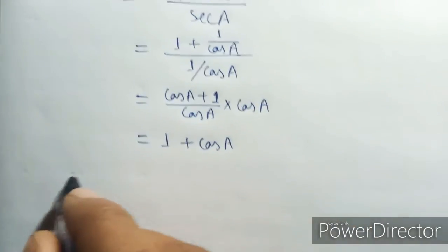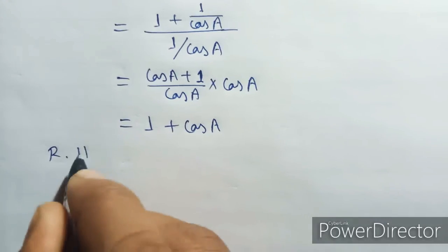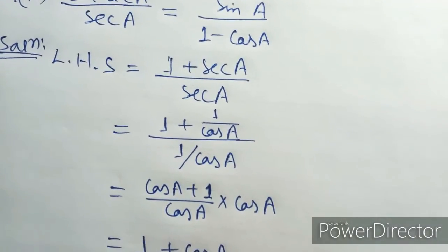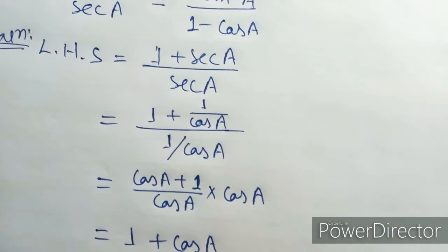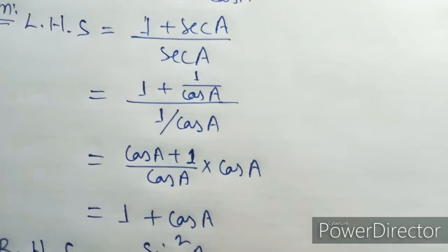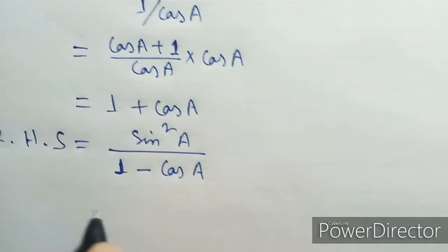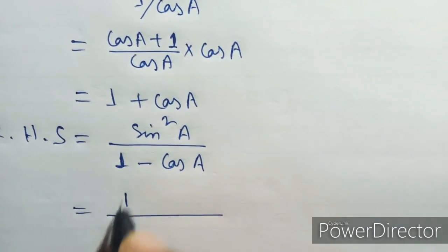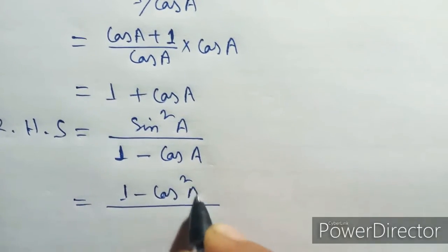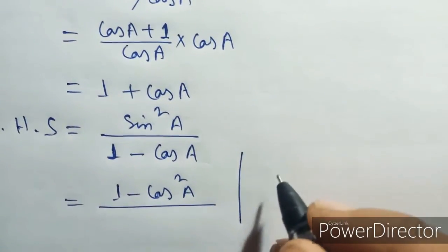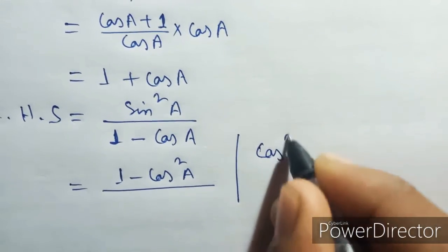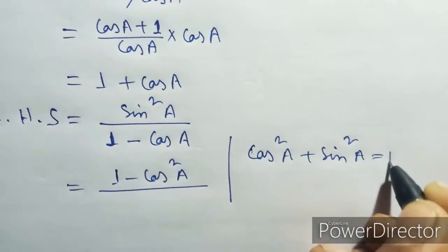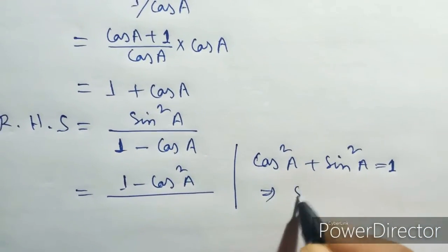Now right hand side: sine squared a by 1 minus cos square a plus sine square a, equal 1 minus cos square a plus sine square a, equal 1. Sine square a...